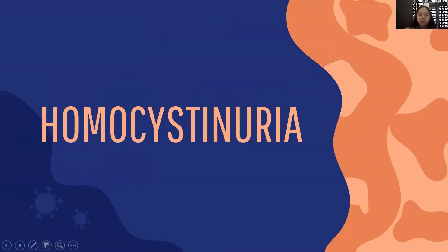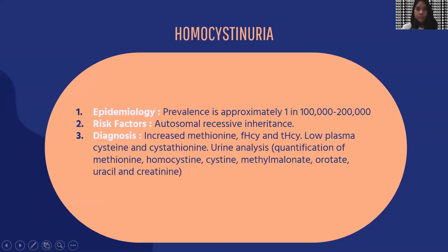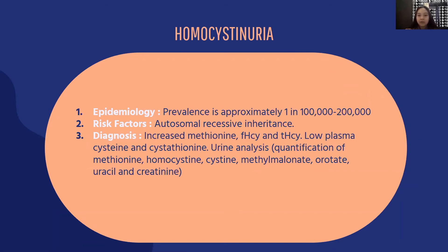The next disease is homocystinuria. Mutations in the cystathionine beta-synthase gene (CBS) are the leading cause of classical homocystinuria. The prevalence rate is about one in 100,000 to 200,000 people in the United States. Homocystinuria exhibits autosomal recessive inheritance. It can be diagnosed by elevated methionine, free homocysteine (fHcy), and disulfide homocysteine (dHcy), along with low plasma cysteine and cystathionine, shown through quantitative amino acid analysis in plasma. It can also be diagnosed by urine analysis through quantification of methionine, homocystine, cysteine, methylmalonate, orotate, uracil, and creatinine.